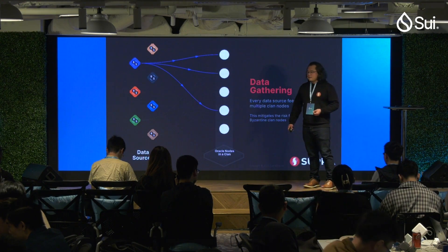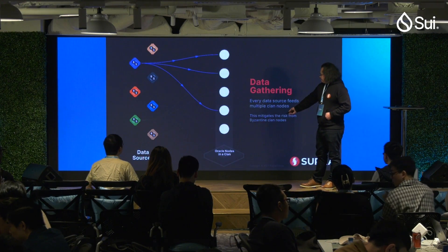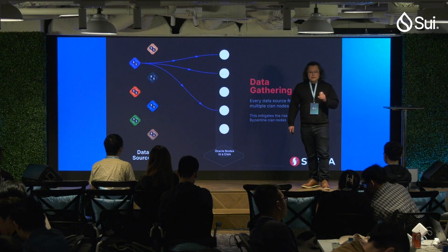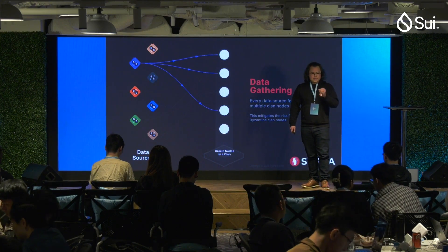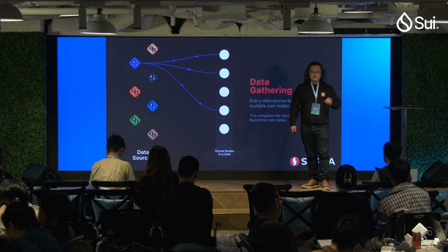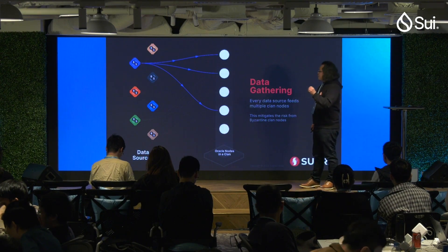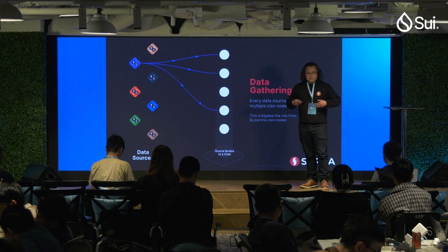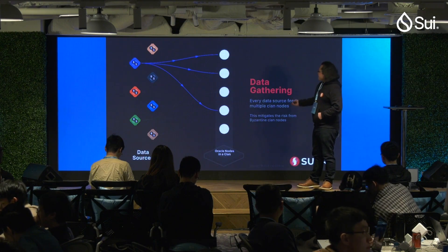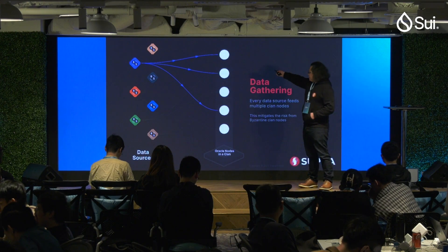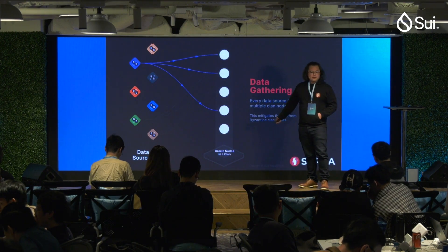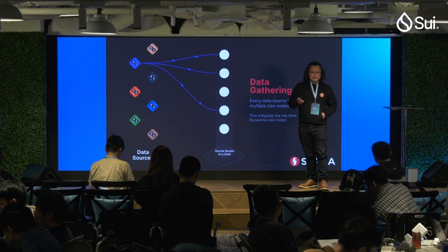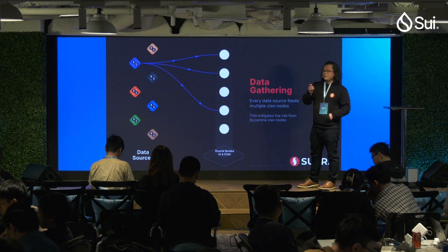In the first phase of the protocol, the nodes in a clan are assigned a subset of the data sources. Every single node does not have to listen to every single data source. We plug in directly to the web socket, so exchanges are pushing data out every second and our nodes are connected directly to it. Notice that a data source is not connecting to every single node in the clan — a clan is a randomized subcommittee of the entire network.